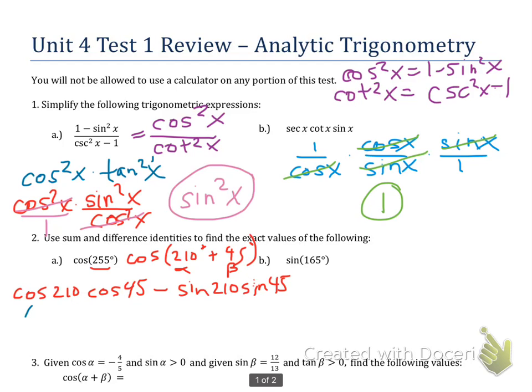So cosine of 210 becomes negative square root of 3 over 2 because it's in quadrant 3. Cosine of 45 degrees is just a positive square root of 2 over 2 minus sine of 210.